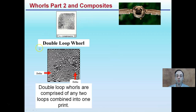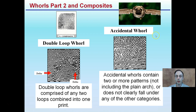Whorls part two covers composites. A double loop whorl is comprised of two loops combined into one print. There's also the accidental whorl — like a composite image of a dog and a bird, a merger of two. It contains two or more patterns, not including the plain arch, or does not clearly fall under any of the other categories. It's somewhat considered a miscellaneous category — a combination of a few different things.